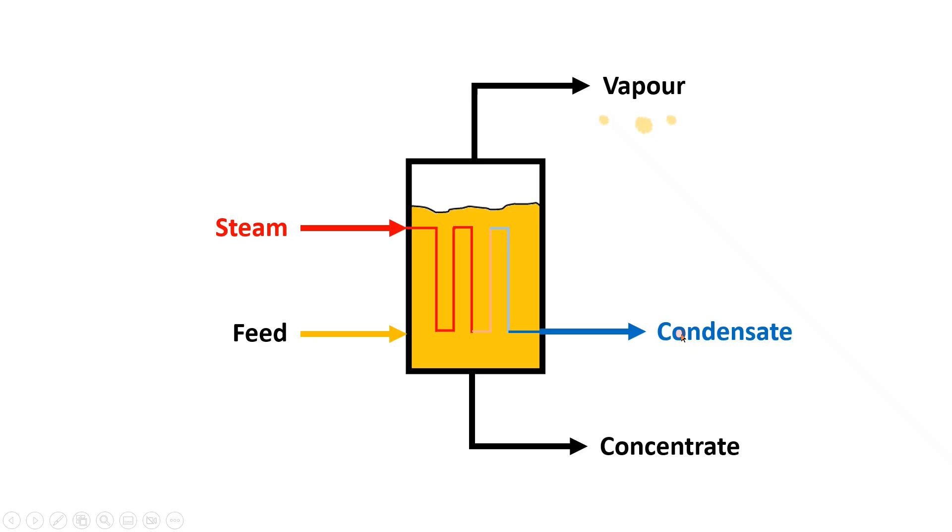This occurs because, as mentioned previously, the steam that is passed through the metal heating tubes gives up and transfers its energy to the solution in order to heat up and vaporize the solution in the vessel. As a result, the steam loses its energy as it passes through the metal tubes.